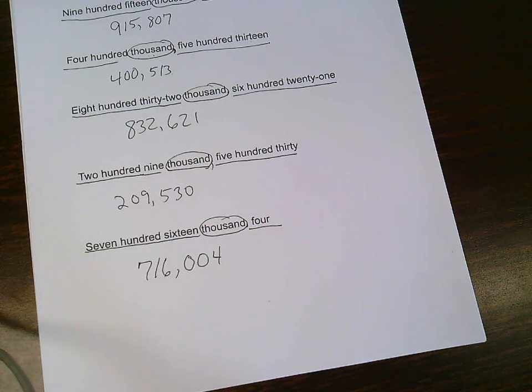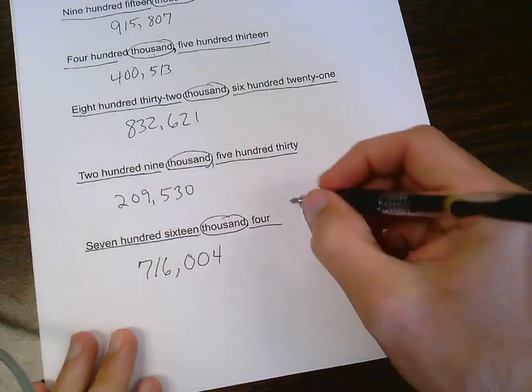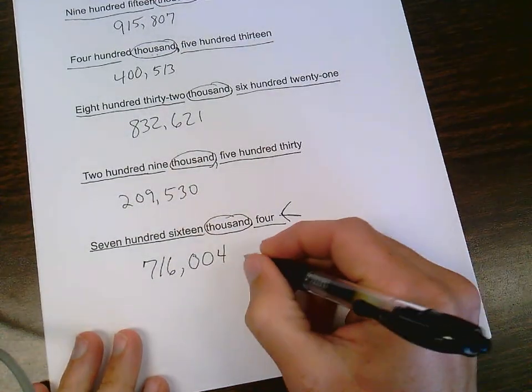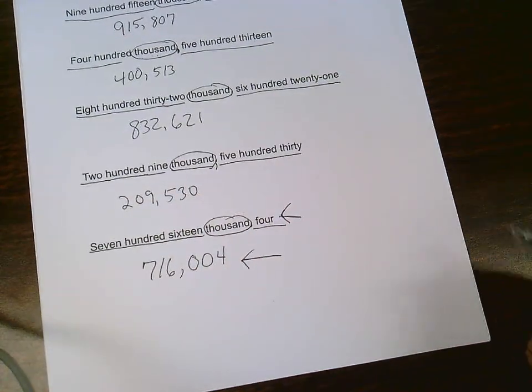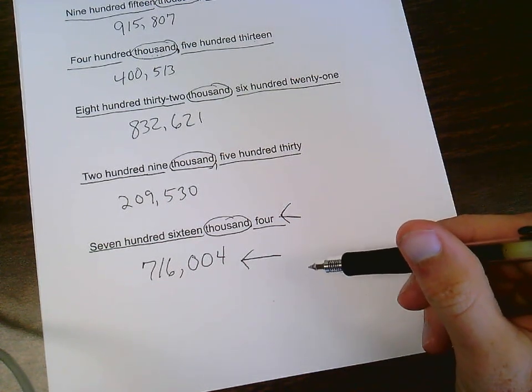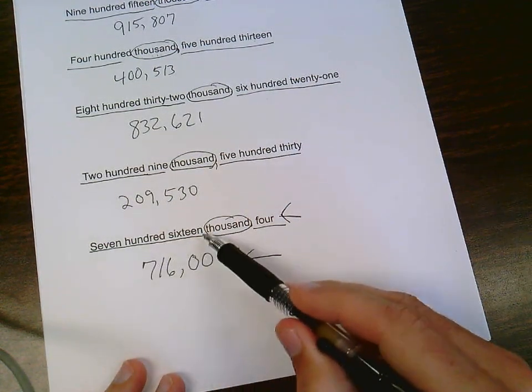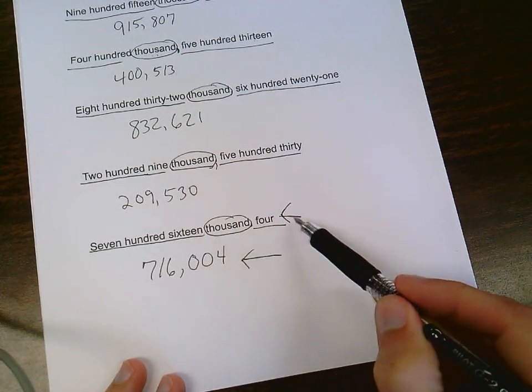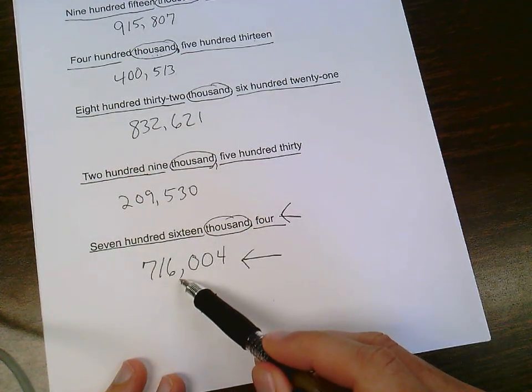And once again, we always want to make sure that we check our work over by making sure that this is read and said the same as that. Our word form should be read and said the same way that our number form is read and said. 716,004, 716,004.